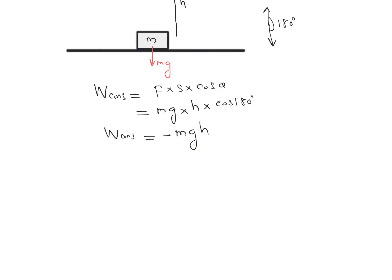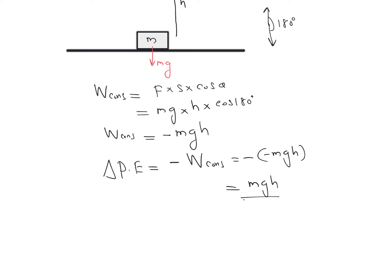We can find the value of change in potential energy for this object. Change in gravitational potential energy = negative of work done by conservative force = negative of (−mgh) = +mgh. So the change in potential energy is mgh.